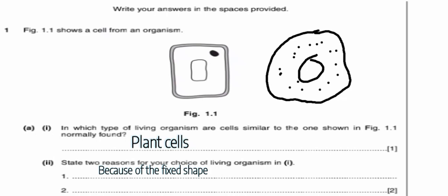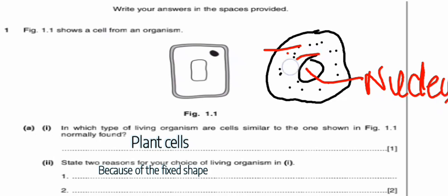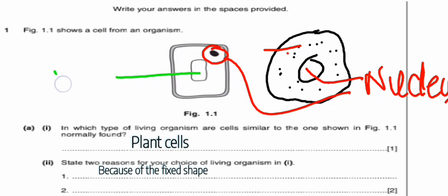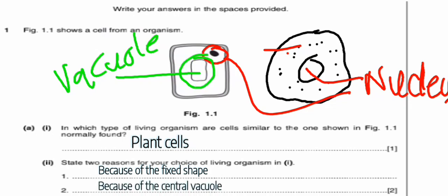The next reason: these structures here are called cytoplasm, and this part here is called the nucleus. The nucleus is located at the center in an animal cell. But in this cell here, the nucleus is off-center, and what is at the center is called the vacuole. The vacuole in a plant cell is located at the center, but in an animal cell, the vacuole is not at the center — it is the nucleus which is located at the center. So the second reason is because of the central vacuole. An animal cell doesn't have a central vacuole.